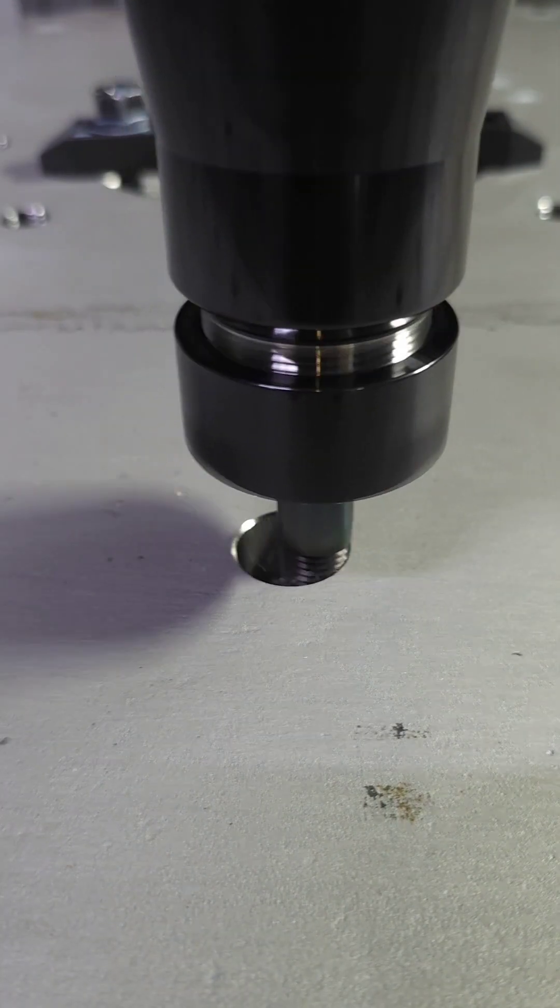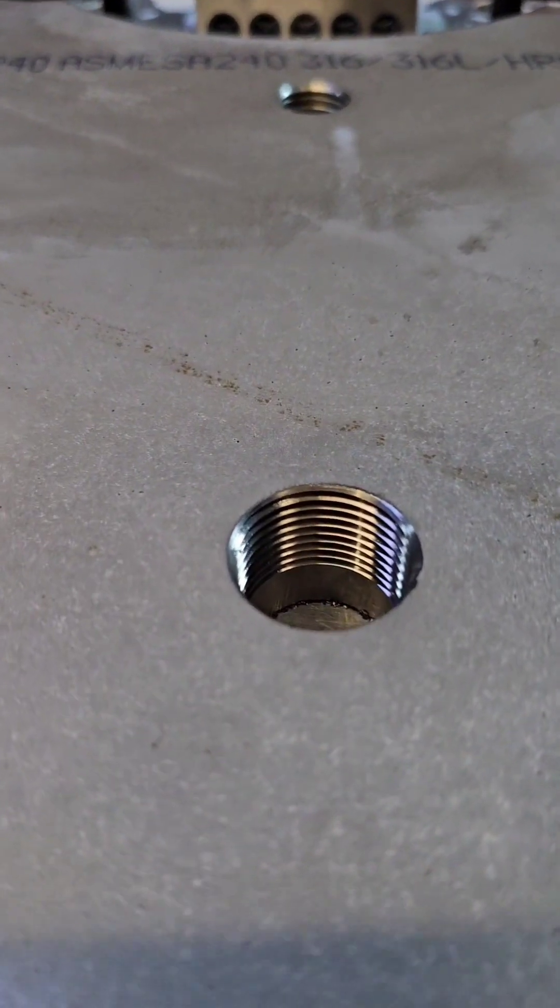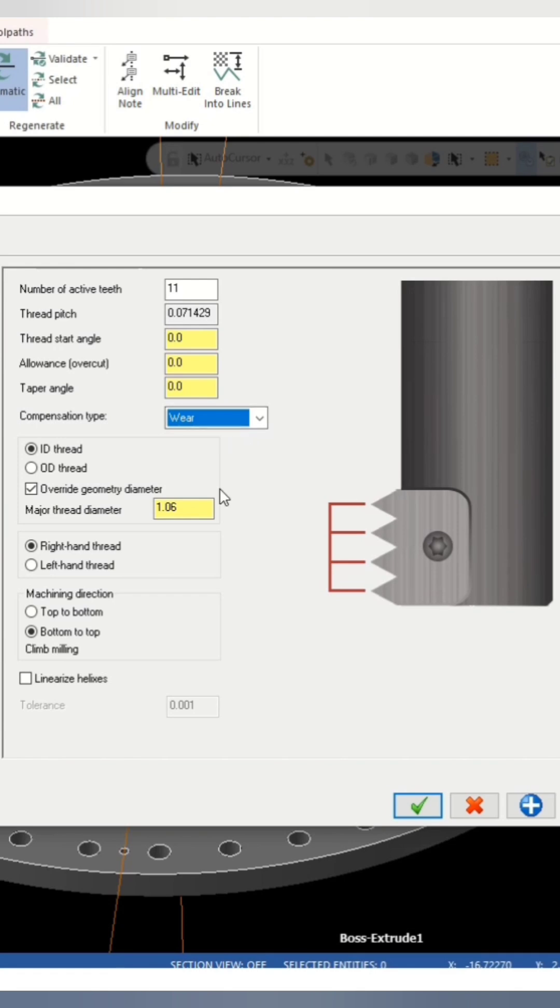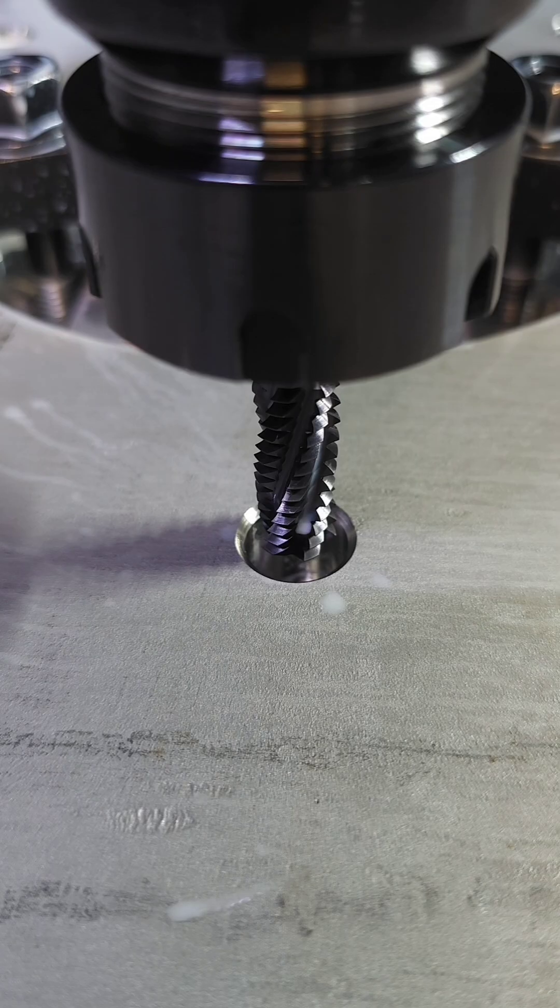Here we're machining a 3 quarter 14 NPT. In our CAM software we're going to set the compensation type to wear which allows us to walk the thread in at the control.